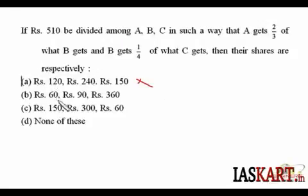In option 2, the ratio of A and B is definitely 2 is to 3. It is 2 times 30 and it is 3 times 30, so it's correct. Now just see, B gets one-fourth of C, that means B is getting 90 and C is getting 360, so even that is correct.